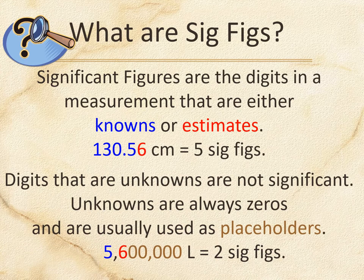Sometimes you have non-significant figures, and they are always zeros — though that doesn't mean zeros are always non-significant. For example, 5,600,000 liters is only two sig figs because of the zeros after the six.